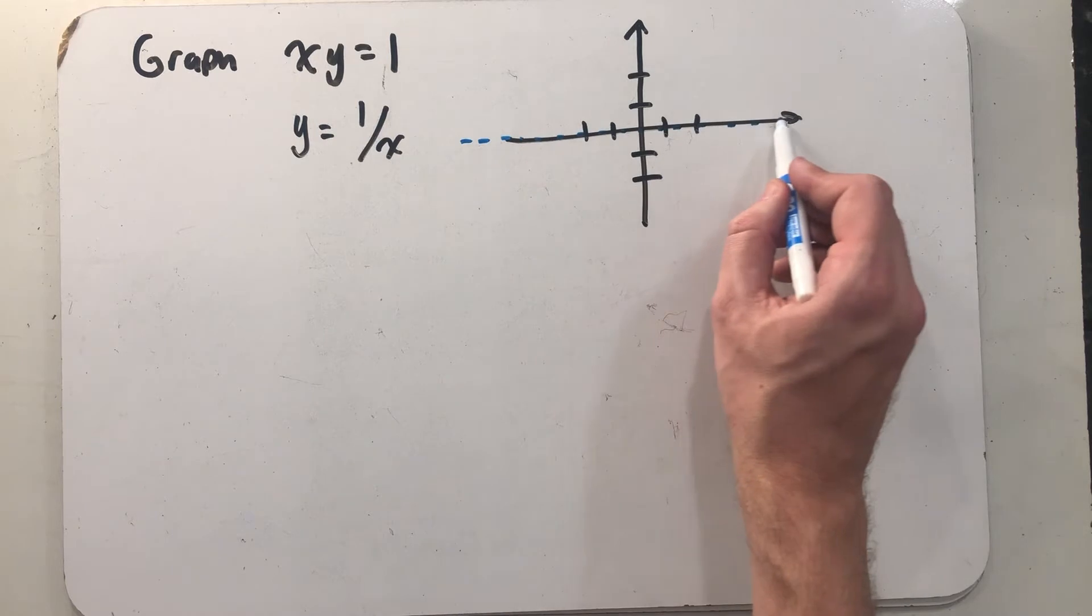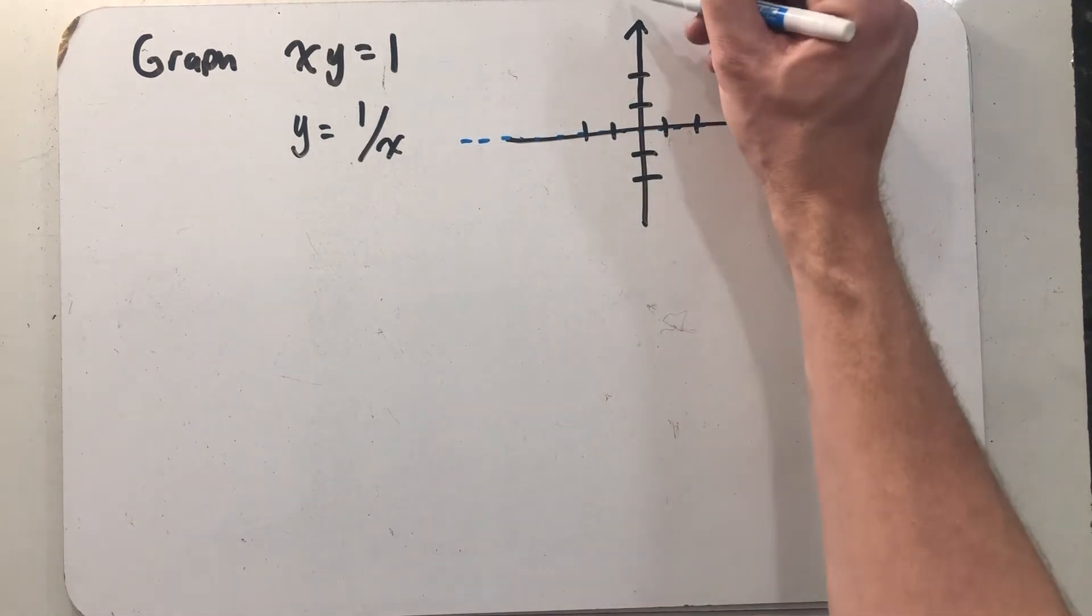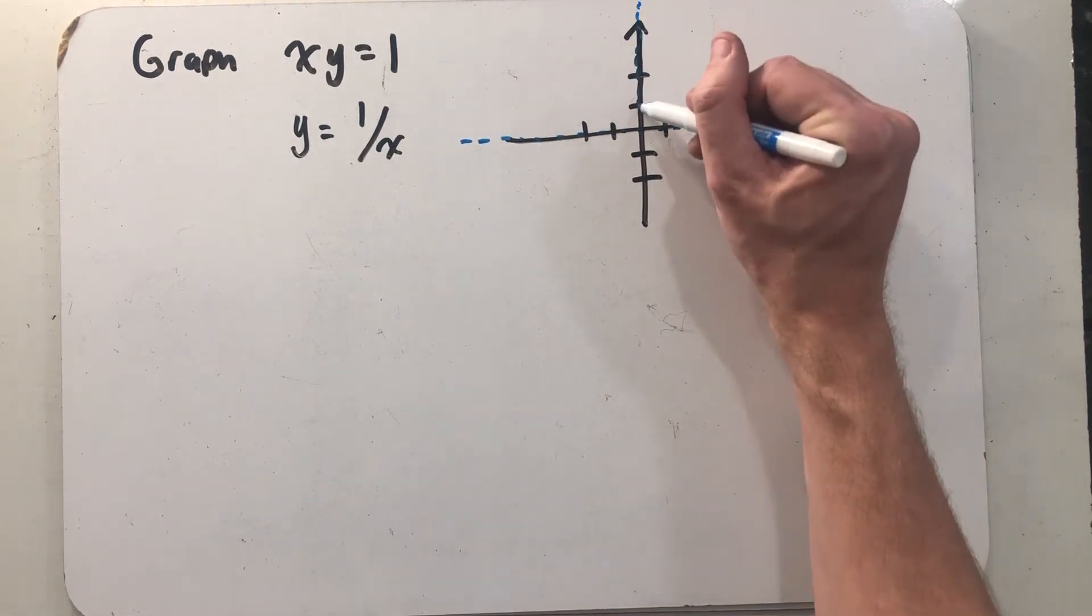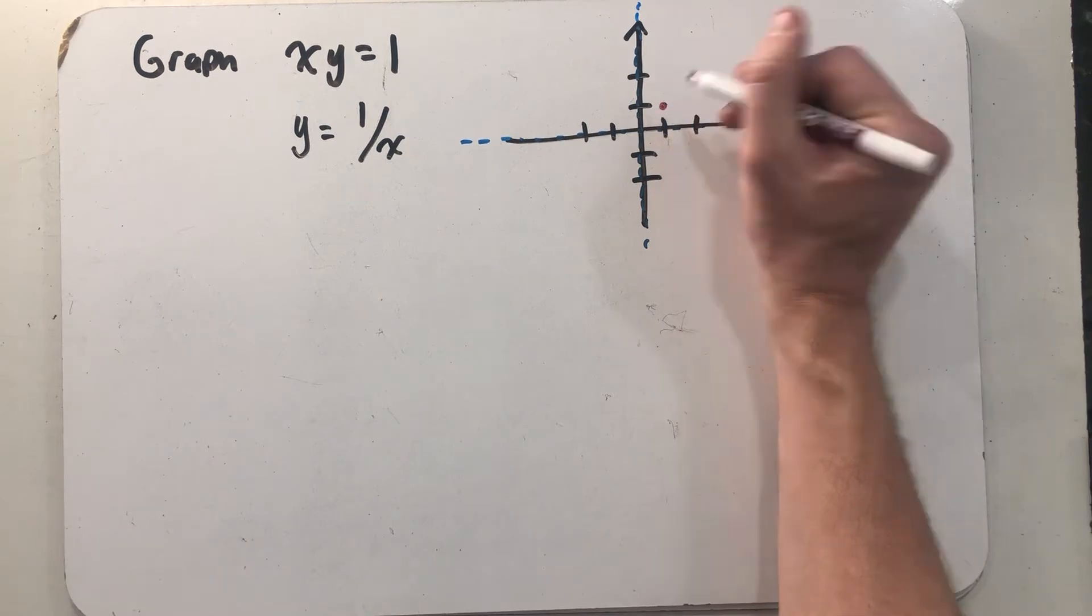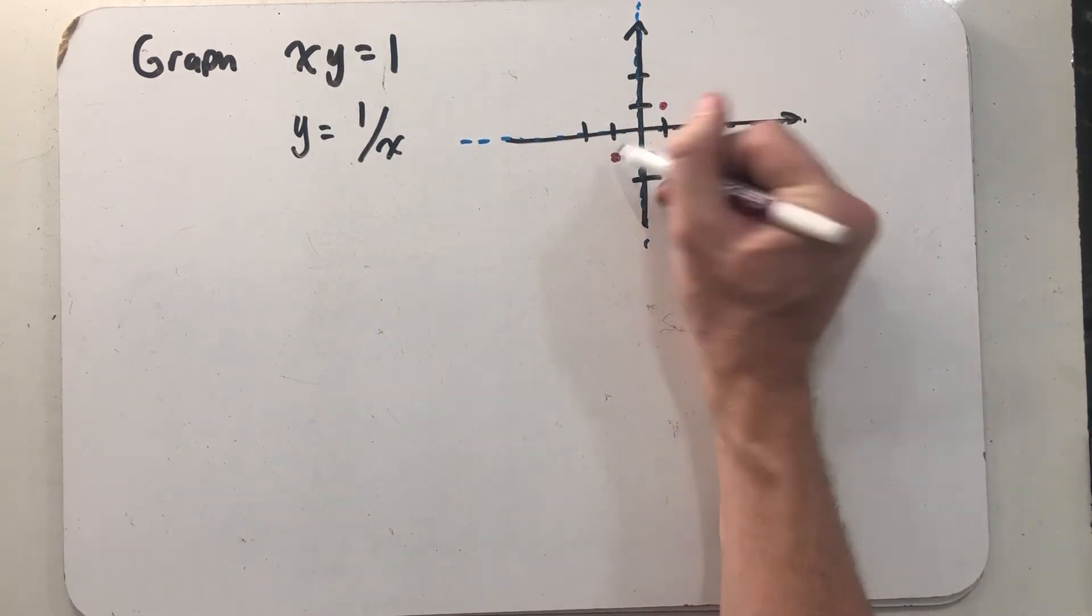The bottom is equal to zero at x equals zero, so there's going to be a vertical asymptote there at x equals zero. We can plot two very quick points: plug in a one, get out a one; plug in a minus one, get out a minus one.